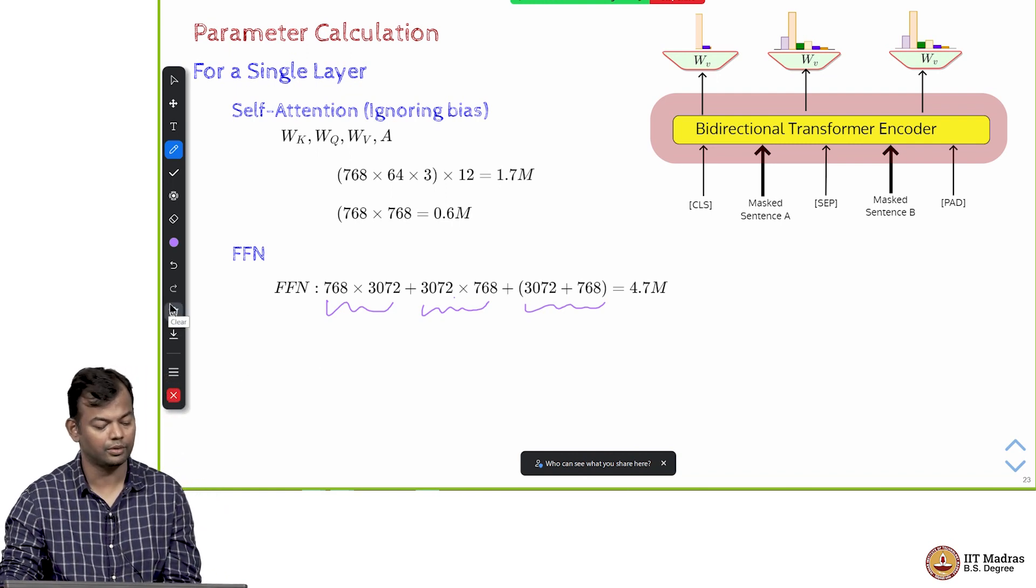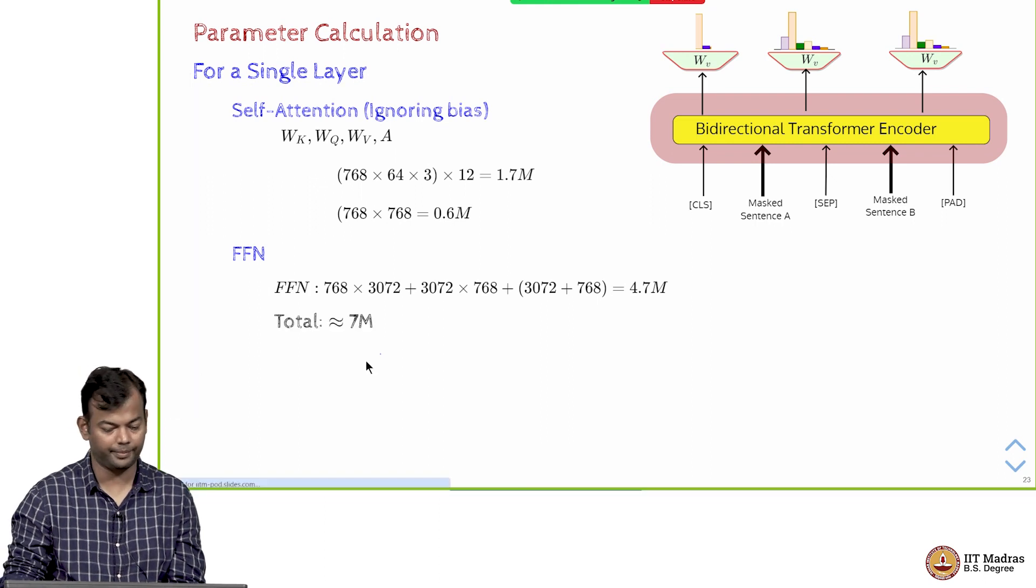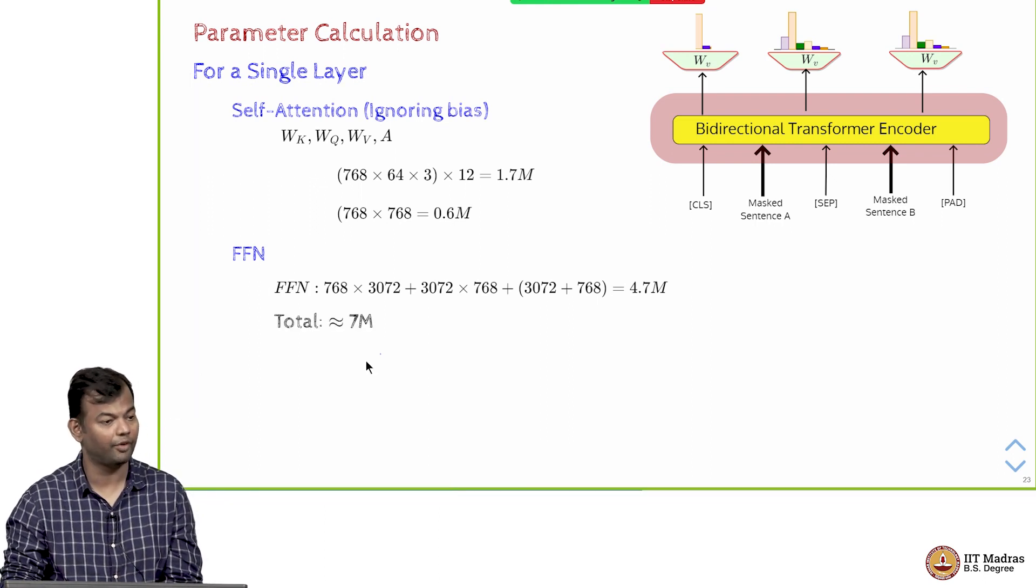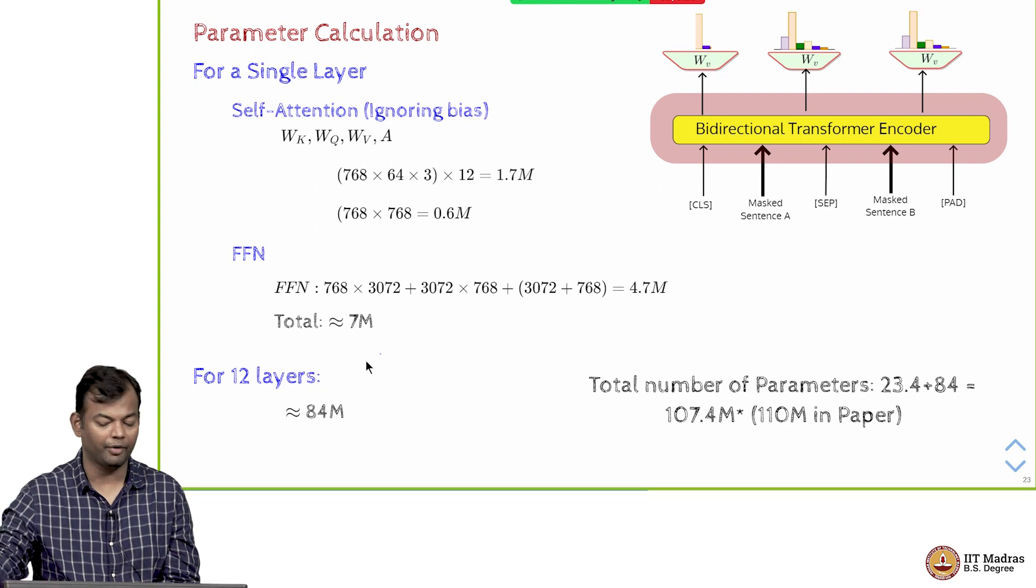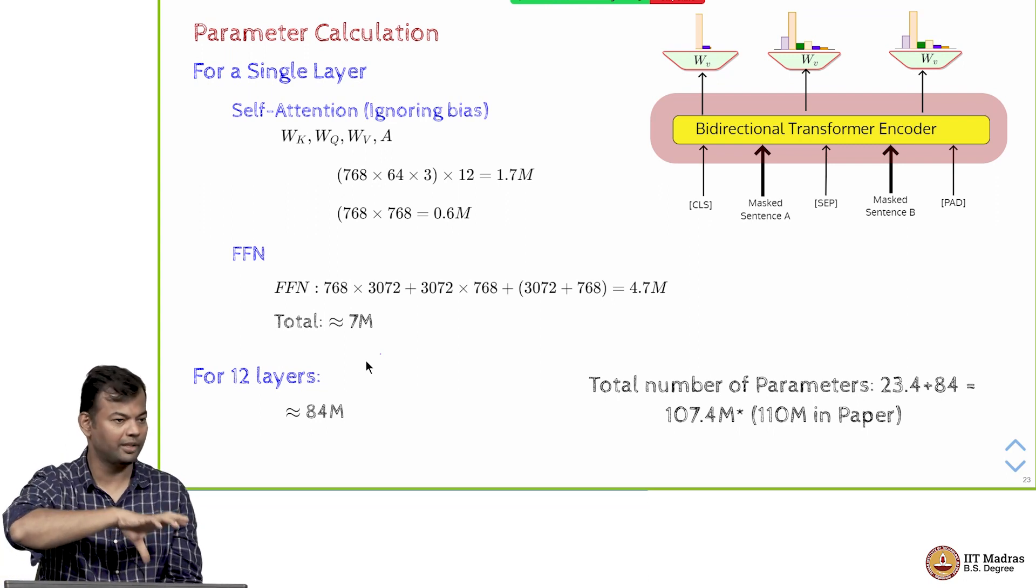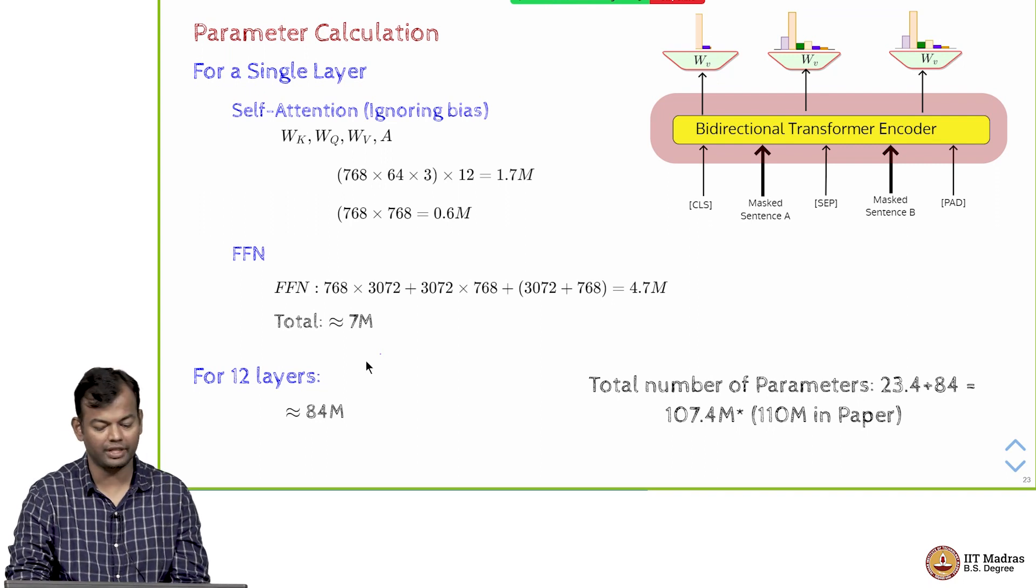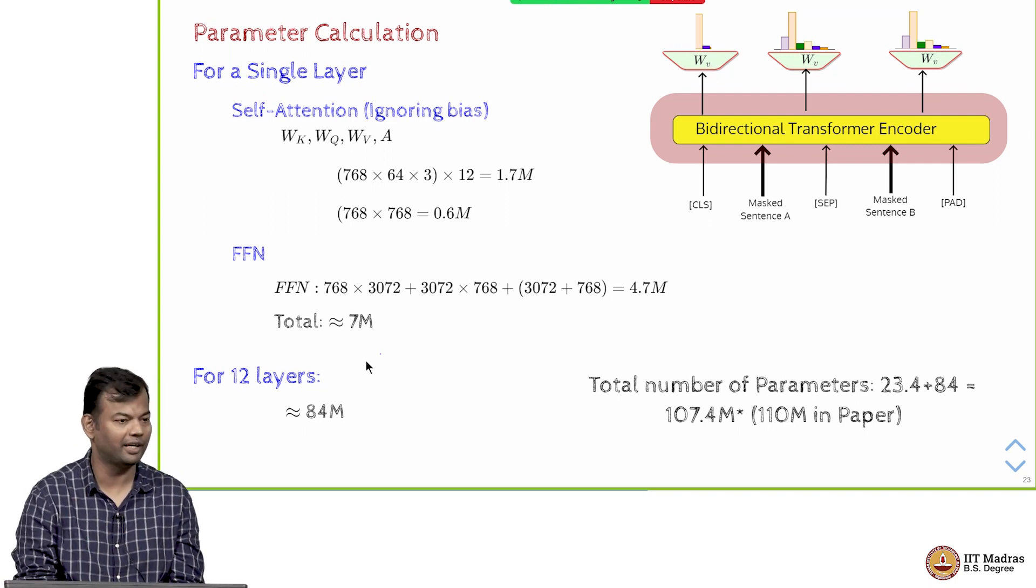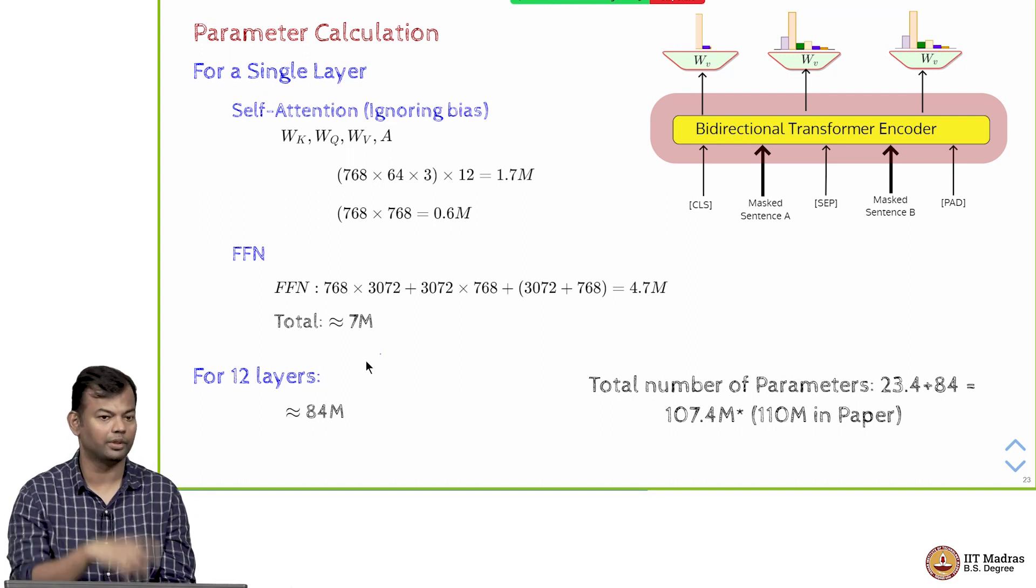Total 7 million for a single layer, and you have 12 layers, so that would become 84 million. Now, the total number of parameters is the embedding layer parameters plus the transformer block parameters; it comes to around 107.4. In the paper it is maintained 110 million. As I said there are some biases and other things which we may not have counted.